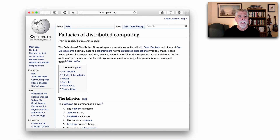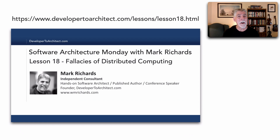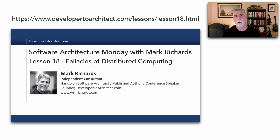Back in the mid-90s, Peter Deutsch and some other folks from Sun Microsystems coined the eight fallacies of distributed computing. I did a lesson — as a matter of fact it was a long time ago, lesson 18 — talking about those fallacies of distributed computing. All eight of those fallacies are as valid today as they were back in the mid-90s. It turns out that Neil Ford and I have been having some fun starting to coin the next eight fallacies of distributed computing.